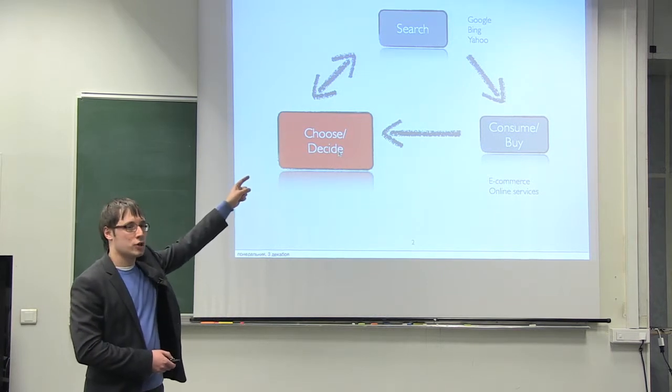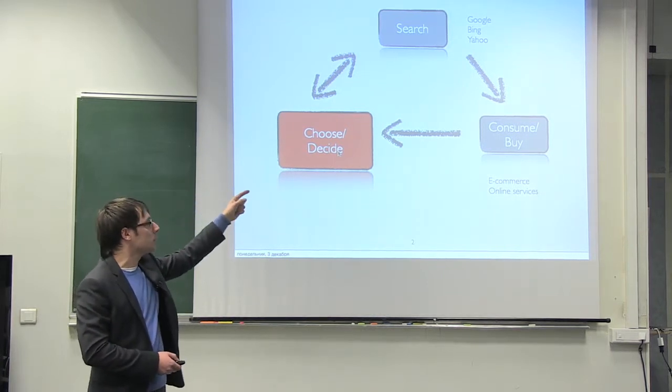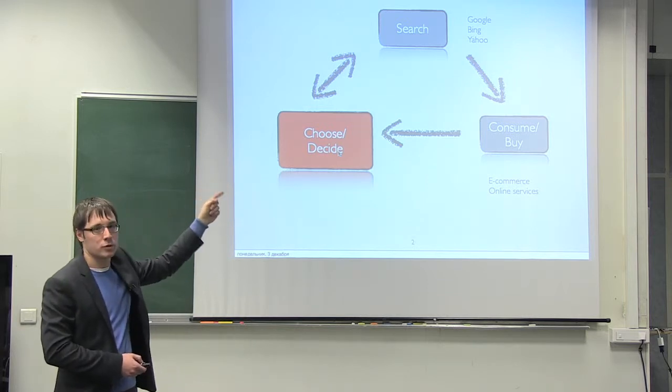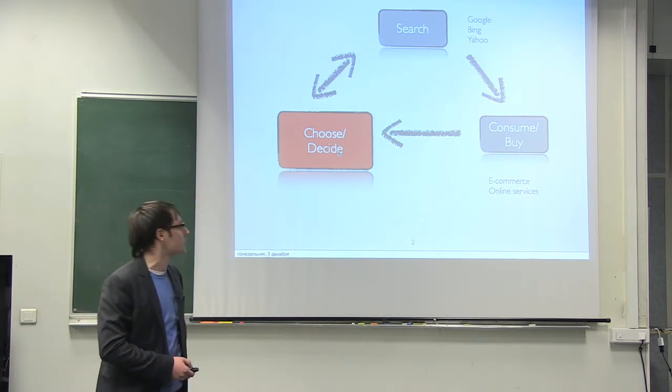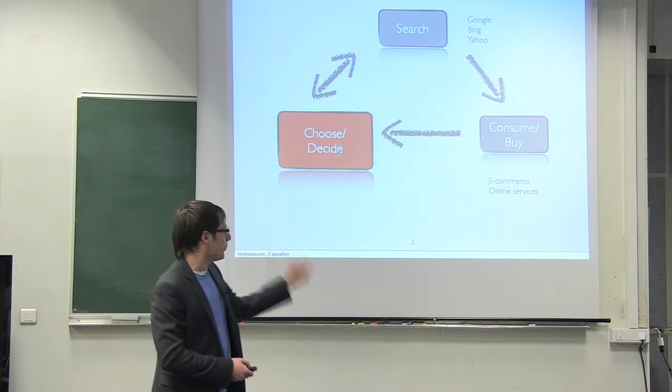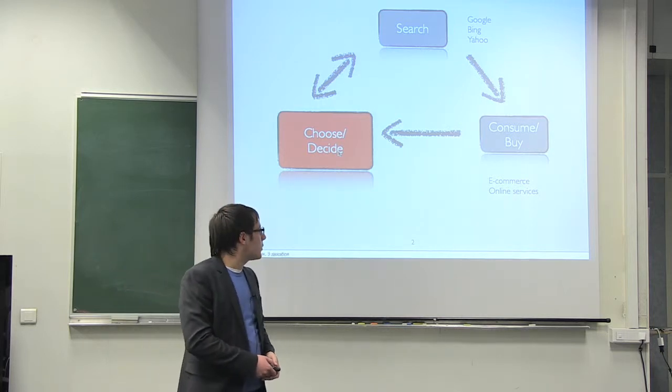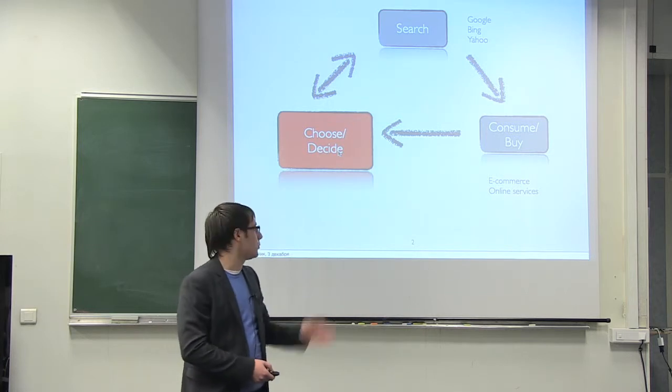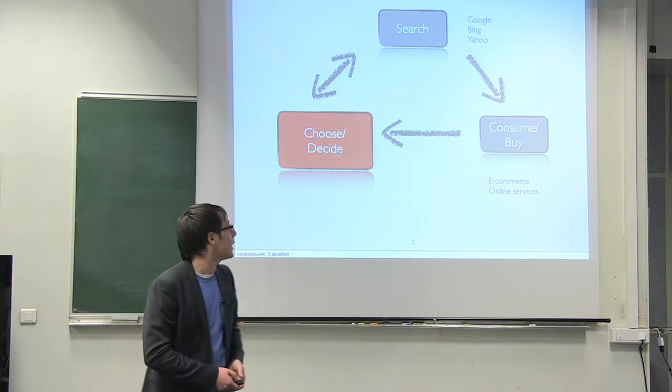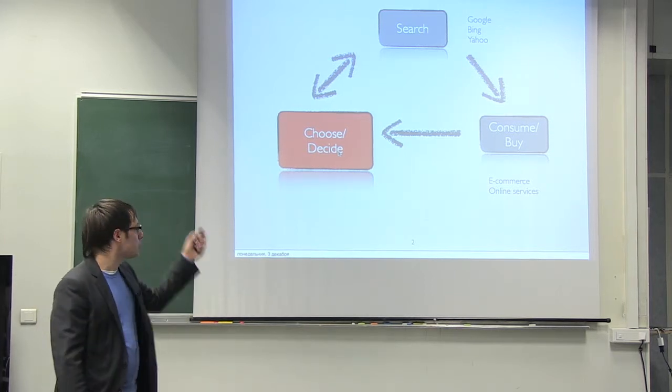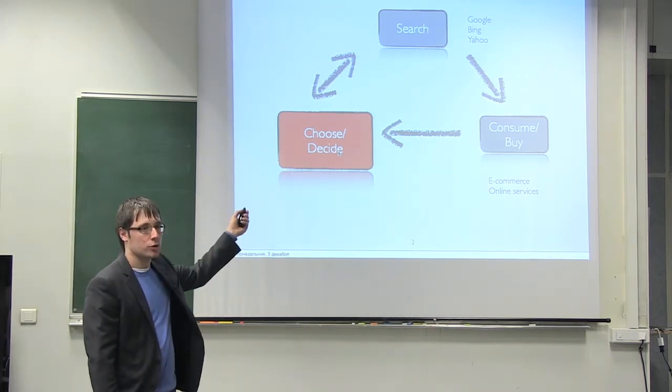There's the search stage, and players like Google and Bing work for user satisfaction at this stage. Then there's a heap of e-commerce sites and online services, so everybody who wants to buy something can do it. It's easy to find and easy to buy, but what about decision-making, what about choosing?